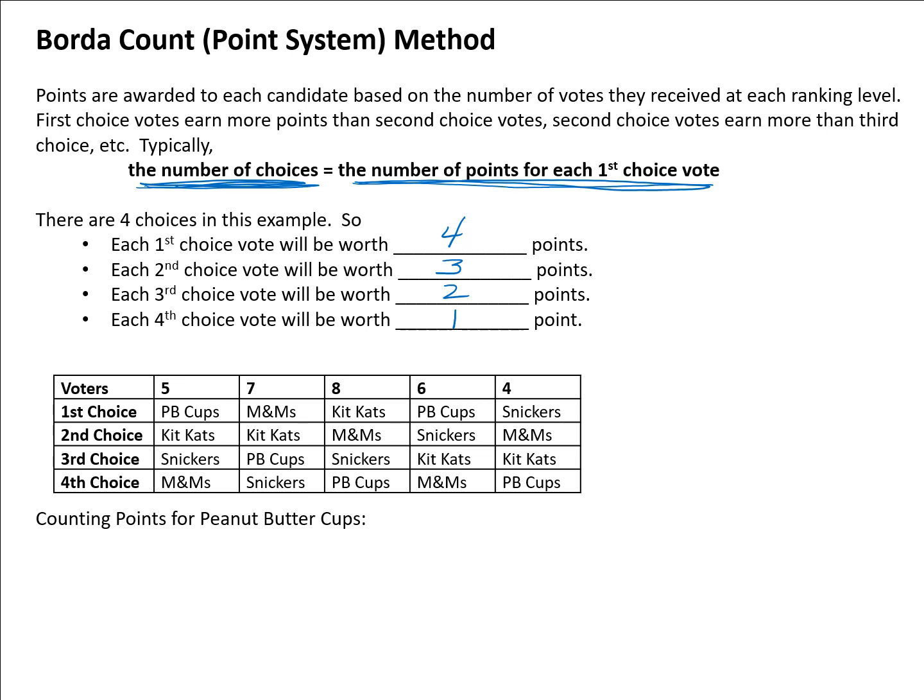This is the most common method, though it doesn't have to be done this way. Let's apply this to the candy election, starting with Peanut Butter Cups. We need to organize a calculation of all first, second, third, and fourth choice votes for Peanut Butter Cups and add all those points together at the end.